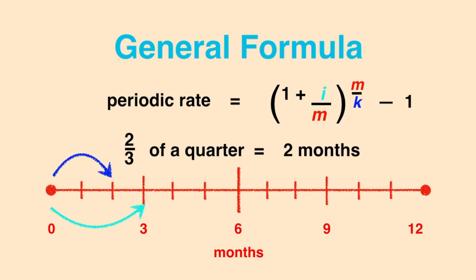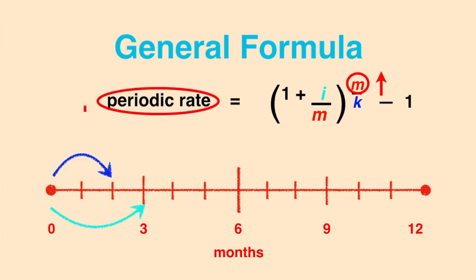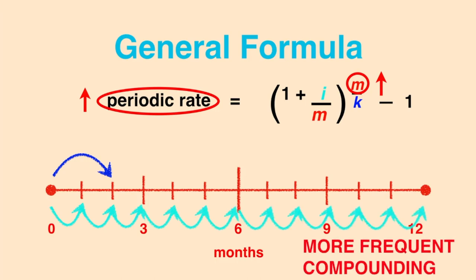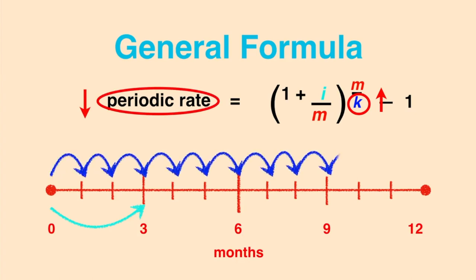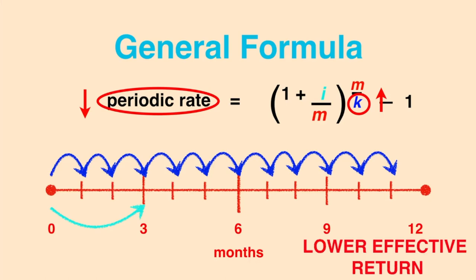As the number of compounding periods in one year increases, the effective period rate increases. This is because more frequent compounding leads to a higher effective return. In other words, you're earning interest on your interest at a faster rate. You can also see that as k, the number of effective periods in one year increases, the effective period rate decreases. This is because the more effective periods you can fit into one year, the shorter these periods must be. The shorter the period, the lower the effective return, because you'll be taking the same annualized rate and chopping it into smaller effective rates.